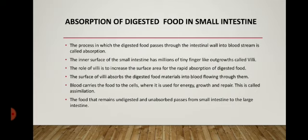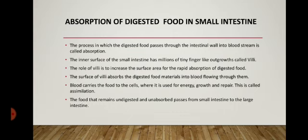The role of villi in the small intestine is to increase the surface area for the rapid absorption of digested food. Each villus has a network of thin and small blood vessels close to its surface. The surface of the villi absorbs digested food materials into the blood flowing through them. This blood carries the absorbed food materials to cells in all parts of the body, where it is used for energy, growth, and repair — a process known as assimilation.